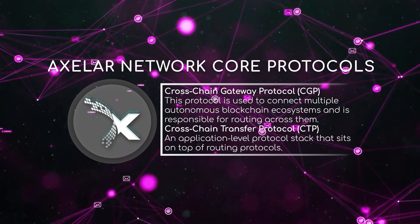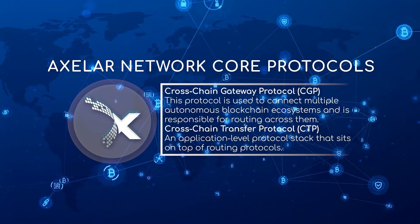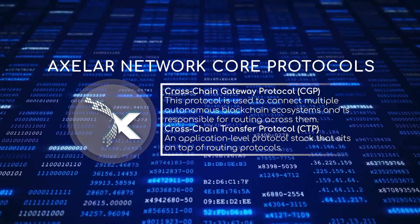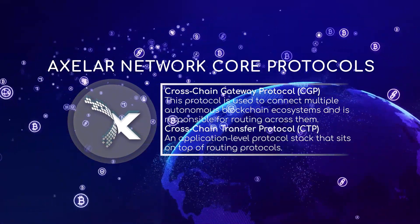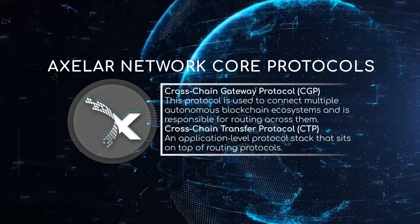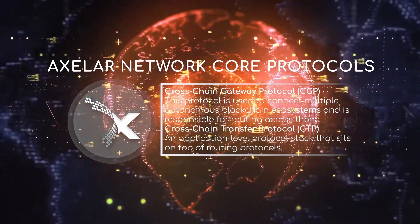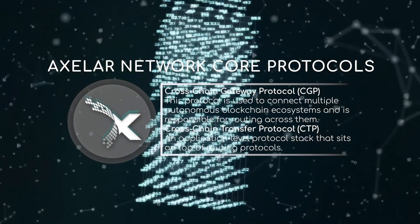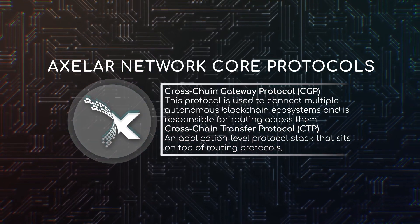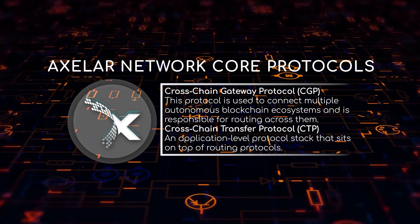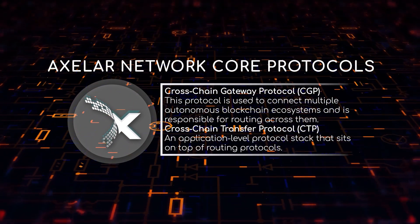Blockchains do not need to speak any custom language; their platform developers do not need to make any custom changes on their chains, and their chains can be plugged into the global network easily. Cross-chain transfer protocol, or CTP, is analogous to application-level protocols like file transfer and hypertext transfer protocols on the internet. It is an application-level protocol stack that sits on top of routing protocols such as CGP and other routing technologies.